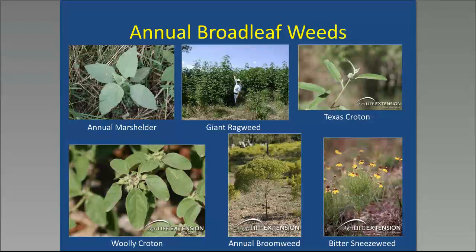These are just a few of the more common annual broadleaf weeds: marsh elder, the crotons, broom weed, sneeze weed. I like this photo of giant ragweed — Dr. Tony Provin, who manages our soils lab on campus, is standing there with his hand in the air, and he's well over six foot tall. You can imagine how tall those giant ragweeds are — 10 to 12 feet. That's not the time to go out and treat. The time to treat those annual broadleafs was earlier in the year when they were small — two to three inches across. We can't let them get big because they're harder to control, and we don't want to let them get far into the season because they're probably going to set seed.